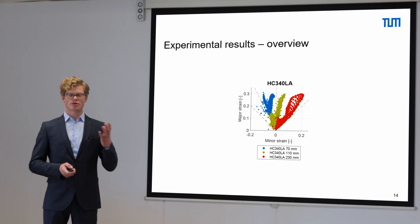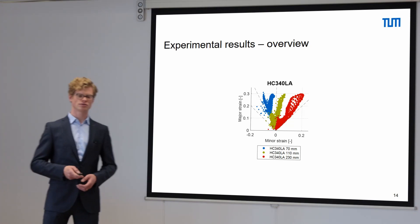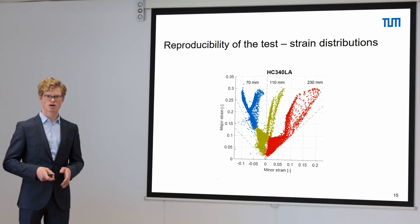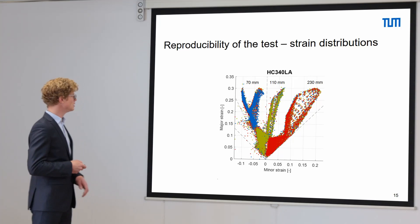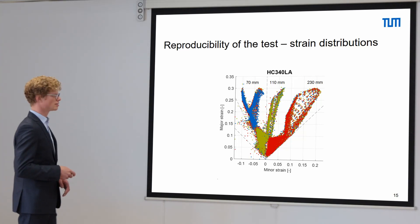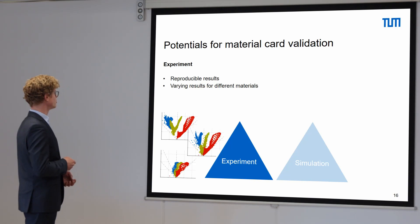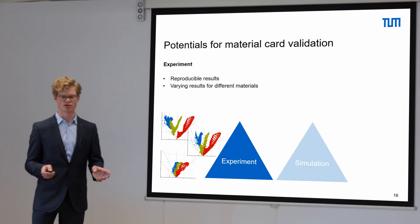As the next step, the question arises regarding reproducibility. We take a closer look at the micro-alloyed steel HC-340LA. We have one repetition for each specimen geometry, and if we perform the same test several times we can see that the strain distribution hardly changes. We can therefore summarize that the reproducibility of the test is really good. On the experimental side we have reproducible tests and varying results for different materials, and these two points are really important as a basis for material card validation.